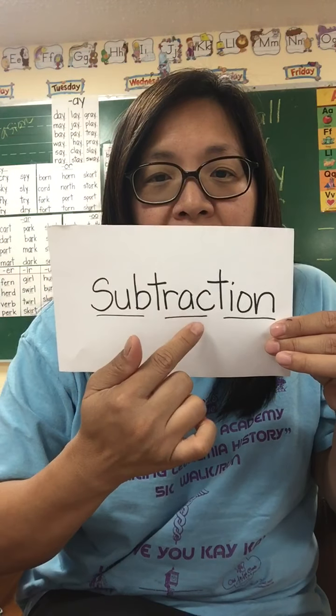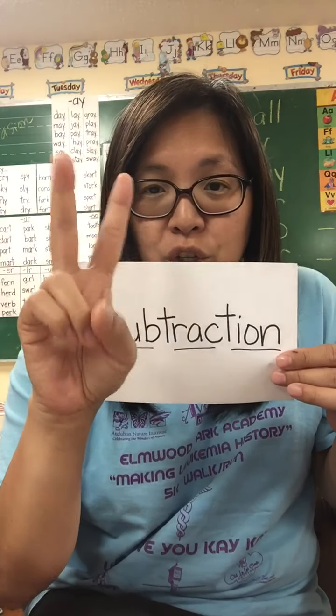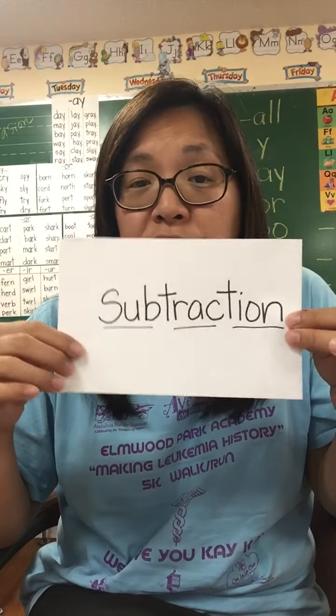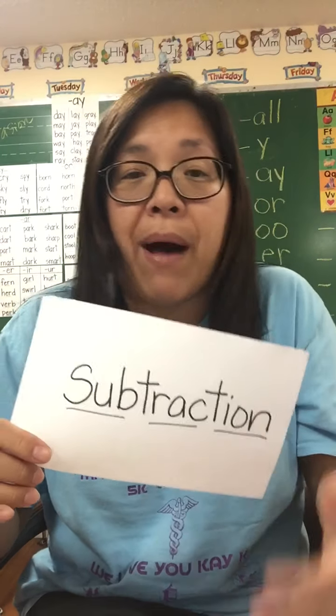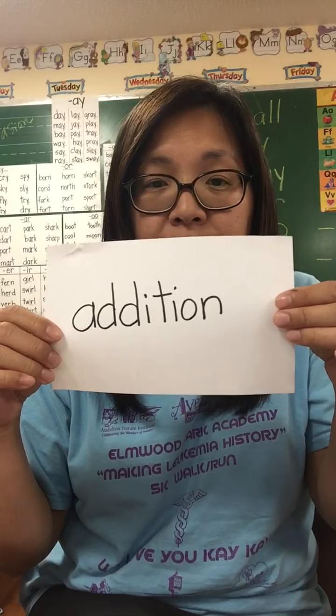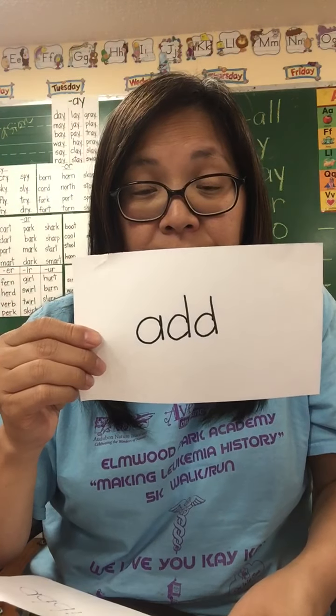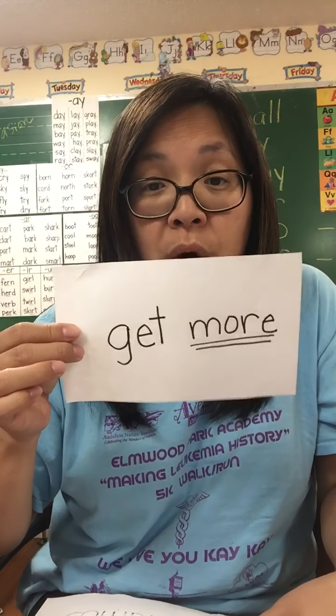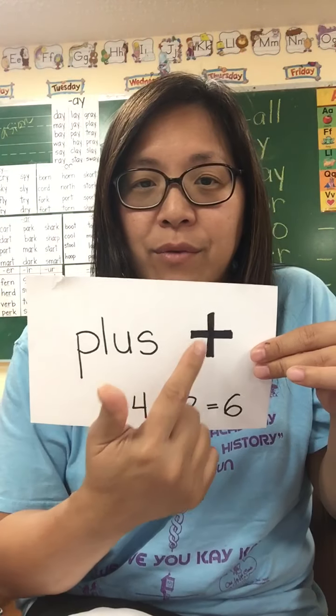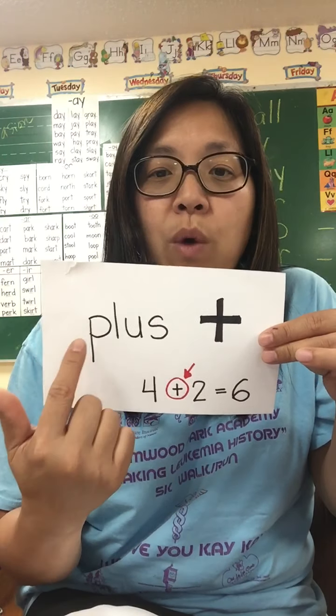Today's lesson is going to be on subtraction. Subtraction — that is a three-syllable word. Subtraction is not the same as addition. When we talked about addition, we talked about adding, putting things together. With addition we combine objects together and we get more. We use the plus sign — that little cross-looking thing — to represent it.